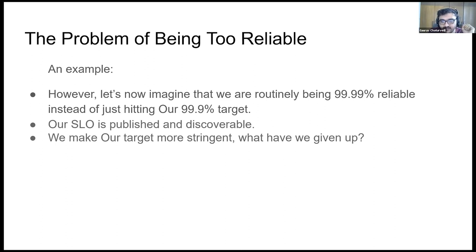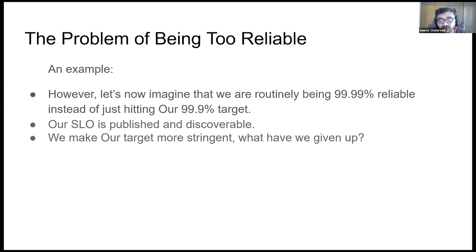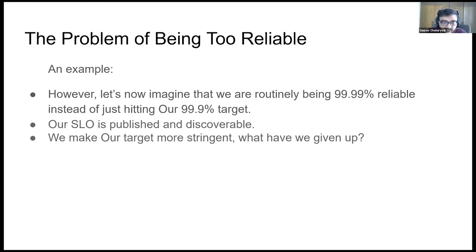By raising our SLO from 99.9% to 99.99%, we have given ourselves fewer opportunities to fail — but also fewer opportunities to learn. If you are being too reliable, you are missing out on opportunities to experiment, to ship features faster than before, or even to induce structured downtime to see how our dependencies react. In other words, we've given up a lot of ways to learn about our system. This is the trade-off.